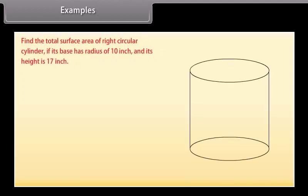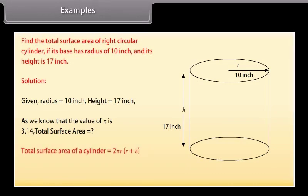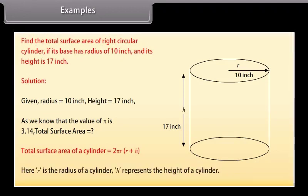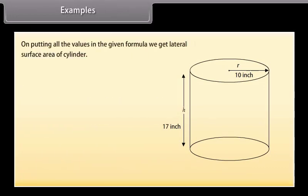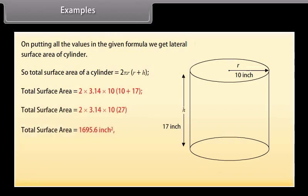Example: Find the total surface area of a right circular cylinder if its base has a radius of 10 inches and its height is 17 inches. Solution: Radius = 10 inches, height = 17 inches, and π = 3.14. Total surface area of a cylinder = 2πr(r + h) = 2 × 3.14 × 10 × (10 + 17) = 2 × 3.14 × 10 × 27. Solving this, the total surface area is 1,695.6 square inches.